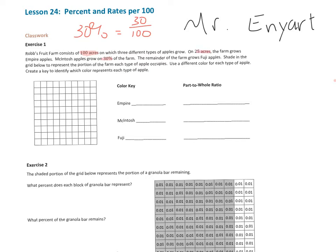And the problem tells us that right here, because there's 100 acres. And over here we have 25 acres that has the empire apples. So the empire apples, the part-to-whole ratio would be 25 out of 100 acres are the empire. Take a moment and see how I got 25 to 100 as my part-to-whole ratio for empire apples to acres.